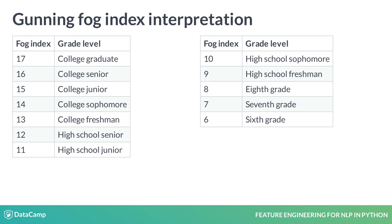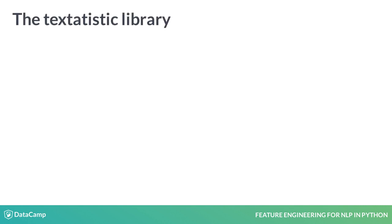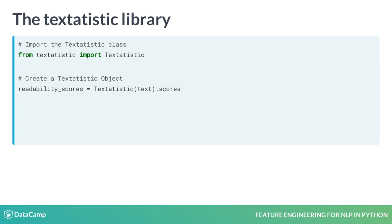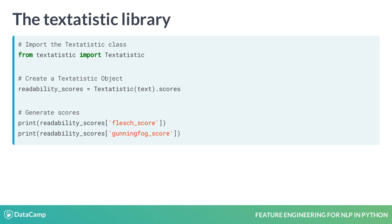A score of 6 would indicate 6th grade reading difficulty, whereas a score of 17 would indicate college graduate level reading difficulty. We can conduct these readability tests in Python using the TextStatistics library. We import the TextStatistics class from TextStatistics. Next, we create a TextStatistics object and pass in the passage or text we are evaluating. We then access the dictionary of readability scores from the TextStatistics object using the scores attribute and store it in a variable named readability_scores. Finally, we access the various scores from the dictionary using their corresponding keys as shown.